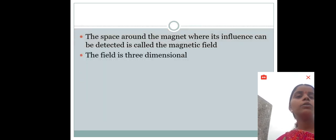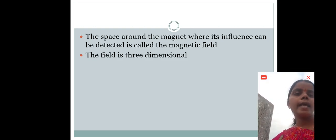See children, next we have to know about magnetic field. What is magnetic field? The space around the magnet where its influence can be detected is called the magnetic field. The field is three-dimensional, means the magnet attracts the objects around it in three-dimensional areas.